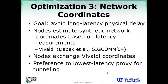Another optimization is the use of natural coordinates. The goal here is to avoid long latency and physical delays when we have communication through a third party, like in the previous example. Out of the many possible nodes that could be candidates for being a proxy, we try to select one that we estimate to have the lowest latency between the two endpoints we're trying to connect.